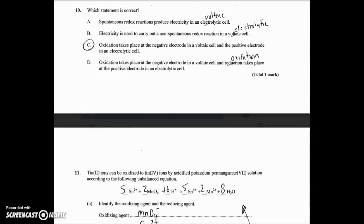Number 10 asks, which statement is correct? Spontaneous redox reactions produce electricity in an electrolytic cell. Well, this is just part of the learning that you just have to realize electrolytic cells use electricity to force redox. But spontaneous redox reactions produce electricity in voltaic cells. They produce voltage. B, electricity is used to carry out a non-spontaneous redox reaction in a voltaic cell. No, they've got A and B just flip-flopped. That's the electrolytic cell is when you use electricity. A voltaic cell is when you produce voltage or produce electricity. C says oxidation takes place at the negative electrode in a voltaic cell and the positive electrode in an electrolytic cell.